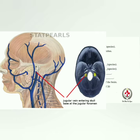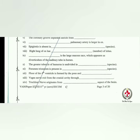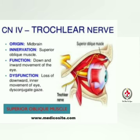The trochlear nerve originates from the anterior part of the supramedullary region, behind the inferior colliculus of the midbrain — also called the posterior aspect of the midbrain. The trochlear nerve is cranial nerve IV and is motor in nature.